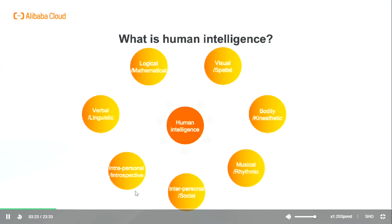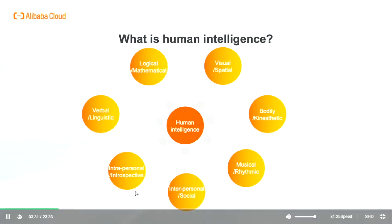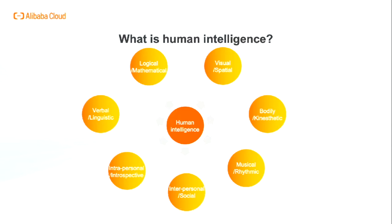Human intelligence can be divided into seven categories: verbo-linguistic, logical-mathematical, visual-spatial, bodily-kinesthetic, musical-rhythmic, interpersonal-social, and intrapersonal-introspective. We call ourselves homo sapiens, man the wise, because our intelligence is so important to us.